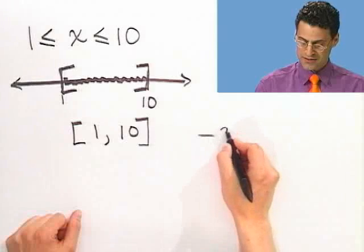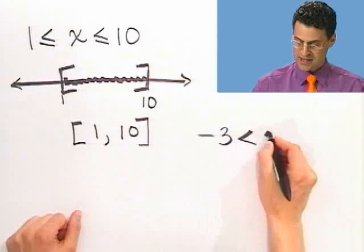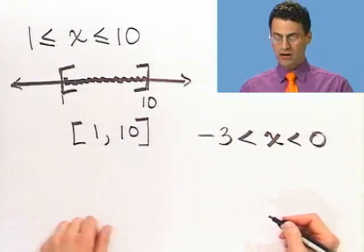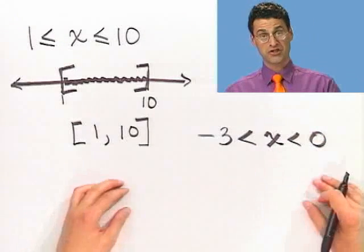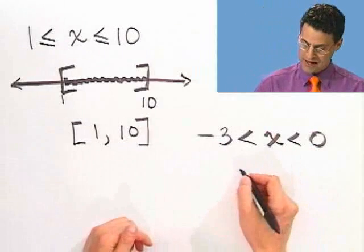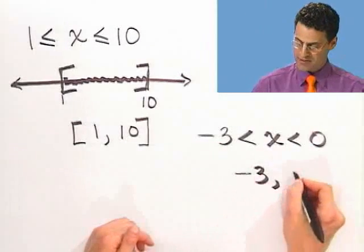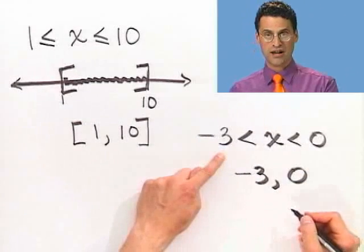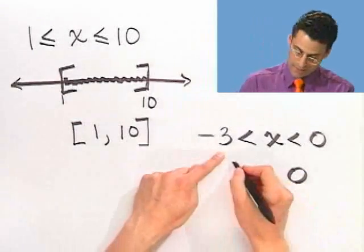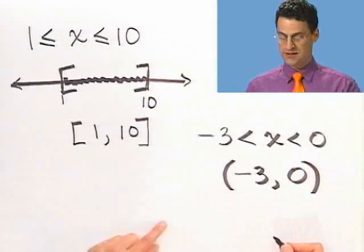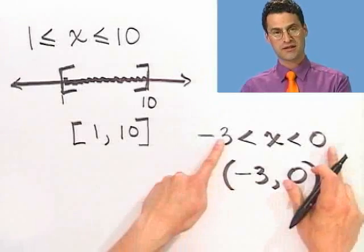Let me try another one here. How about minus 3, less than x, less than 0? How would that look? Well, you could draw the number line again. Notice you put parentheses in both cases. Or you could just now start jumping right to the interval notation and put down negative 3, 0, and then say now, do I want to include negative 3? Shake your head right now. No. So we put a parentheses. And then do we want to include 0? No. So we put another parentheses. And so this would be the interval notation for this.